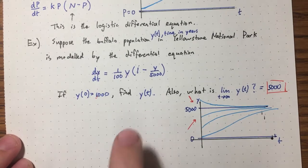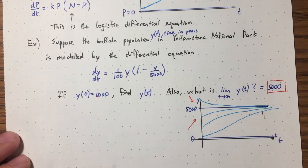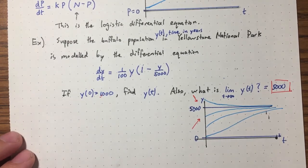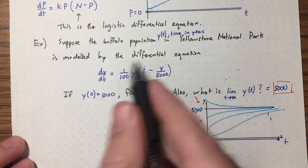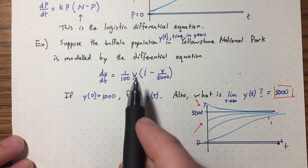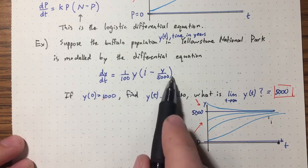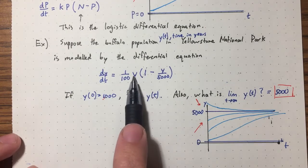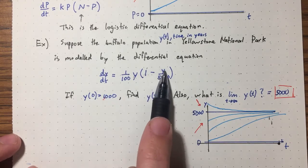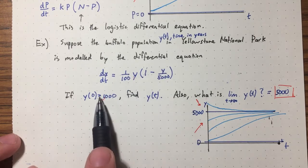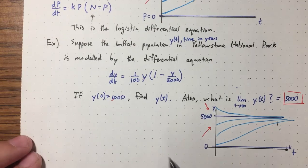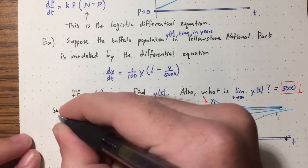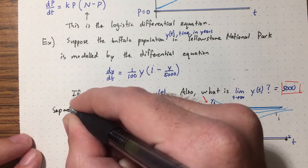Now let's actually find the explicit function. You often want to estimate the population one or two years in the future, so you need the explicit formula. This differential equation is not linear — it produces a y-squared term — but it is separable because it doesn't involve t explicitly (it's autonomous). So we'll use separation of variables: divide both sides by y·(1 − y/5000) and move (1/100)dt to the other side, then integrate both sides.